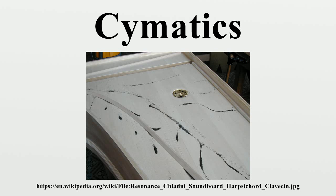In 1967, Hans Jenny, a follower of the anthroposophical doctrine of Rudolf Steiner, published two volumes entitled 'Cymatics,' in which, repeating Chladni's experiments, he claimed the existence of a subtle power based on the normal, symmetrical images made by sound waves. Jenny put sand, dust and fluids on a metal plate connected to an oscillator which could produce a broad spectrum of frequencies. The sand or other substances were organized into different structures characterized by geometric shapes typical of the frequency of the vibration emitted by the oscillator.